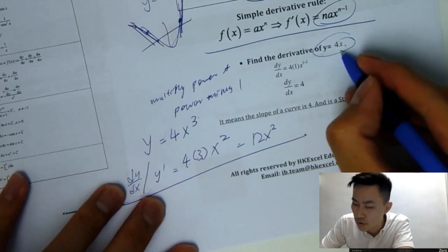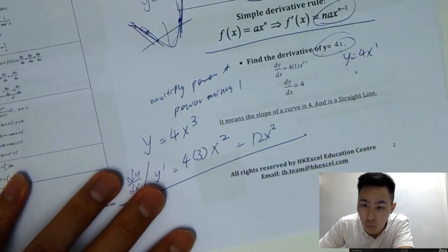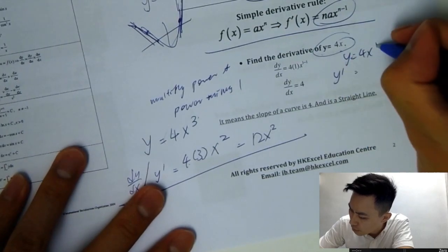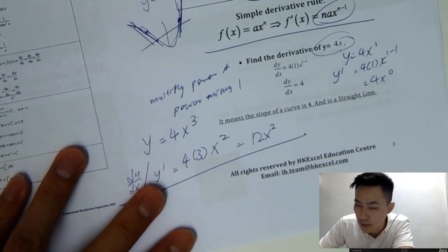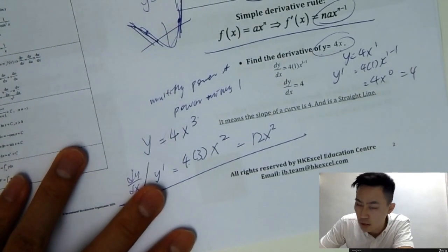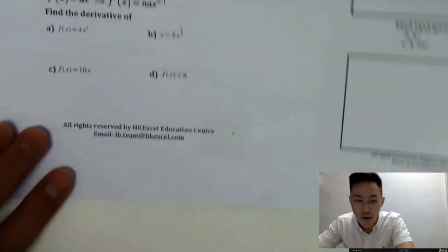And how about we look at y equals to 4x. So y equals to 4x, that means x is power 1 right here. y prime, we can put the power down. And then power minus 1. 1 minus 1. So 4x power 0. So x power 0 will be just equal to 4. That's it. Easy, right?